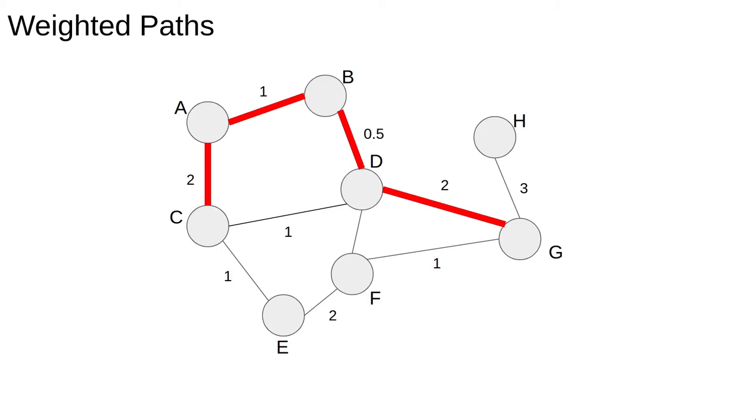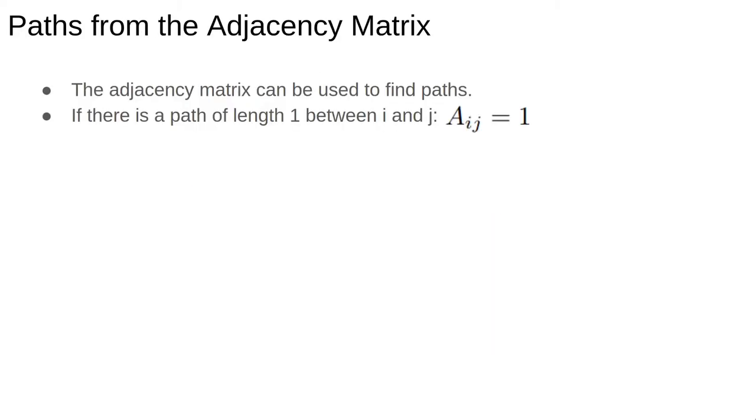Usually, the extension to weighted paths is fairly straightforward. The adjacency matrix can be used to think about paths. By definition, if there is a path of length 1 between i and j, then the ij element of the adjacency matrix equals 1.